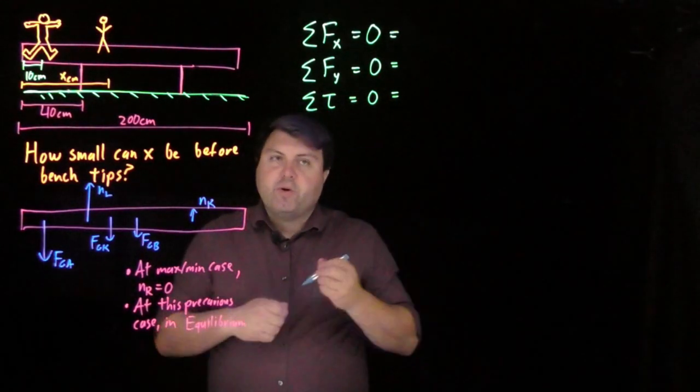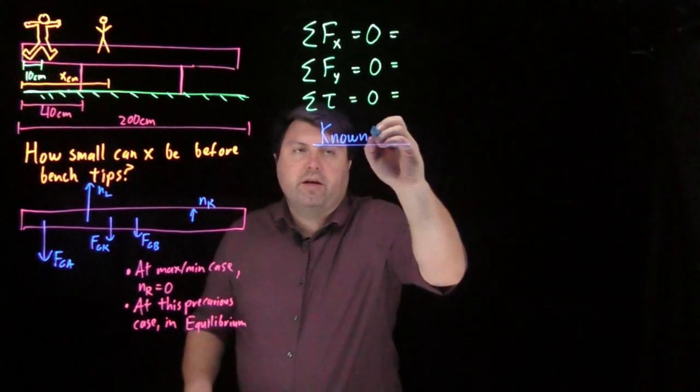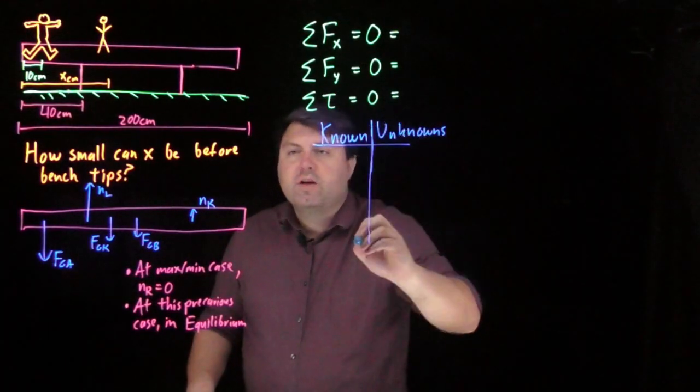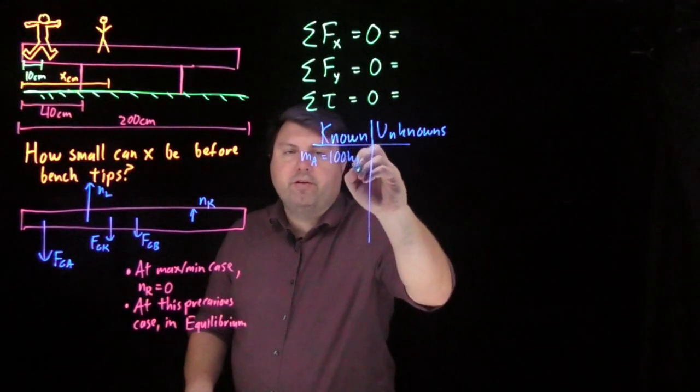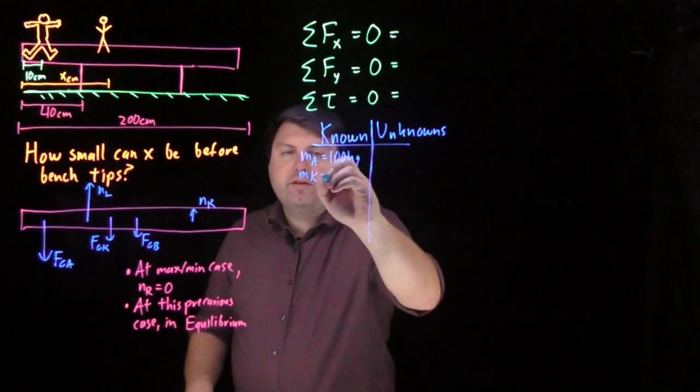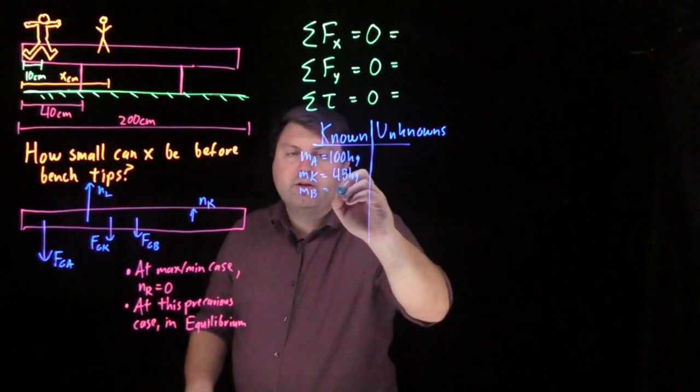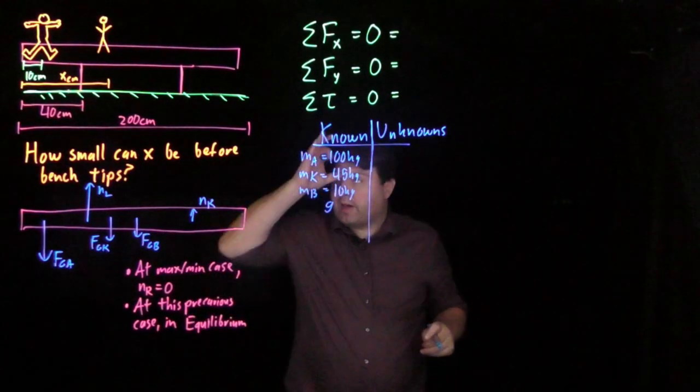So let's compose a table of our knowns and unknowns. So we know the three masses. The mass of our adult, as we said, was 100 kilograms. The mass of the kid is 45 kilograms. The mass of our bench is 10 kilograms. And we, of course, know g. Everyone's happy with that.